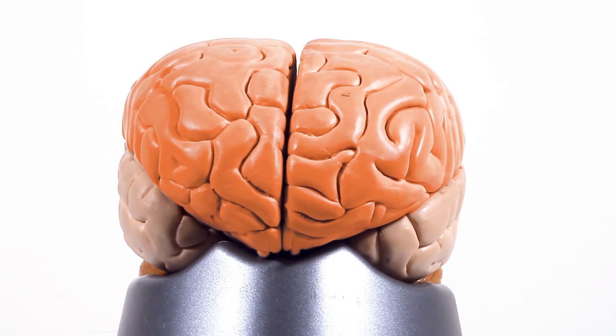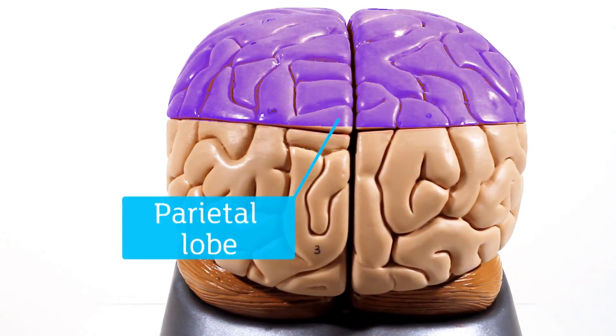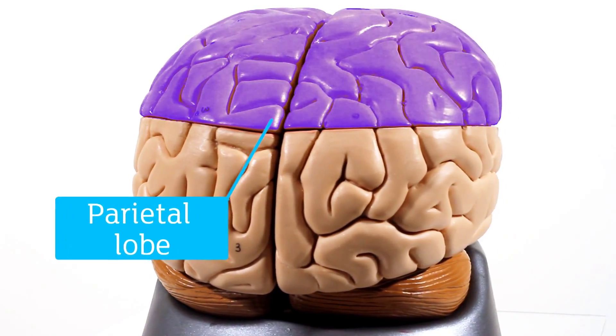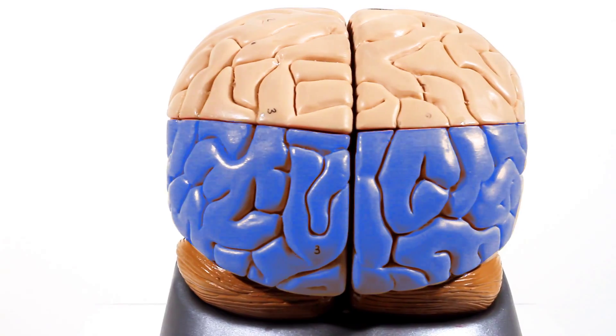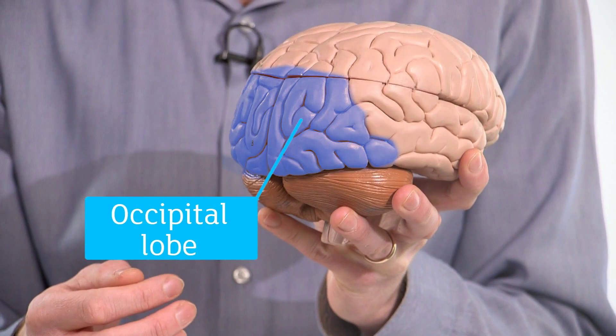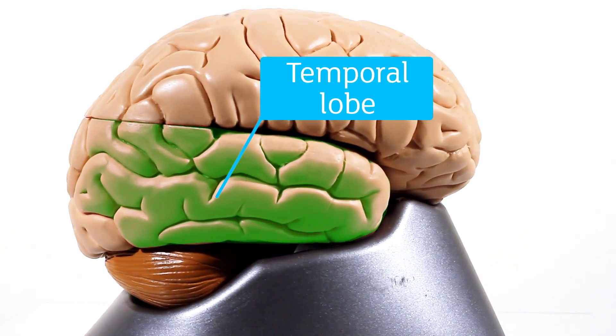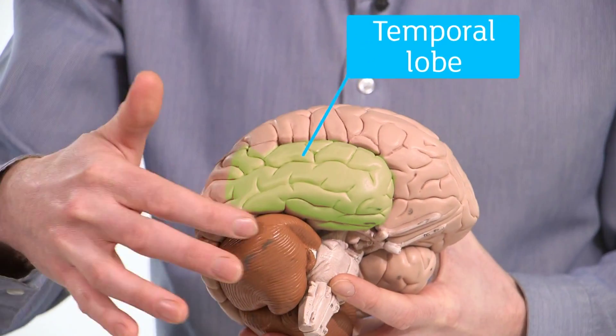So at the front of the brain, this bit's called the frontal lobe. And then we have the back bit of the brain, called the parietal lobe here. And right around the very back, we have this bit of the brain, called the occipital lobe. And then round the side, we have this bit of the brain, which is called the temporal lobe.